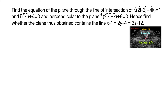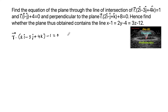Find the equation of the plane through the line of intersection of the planes r dot (2i - 3j + 4k) - 1 = 0 and r dot (i - j) + 4 = 0.